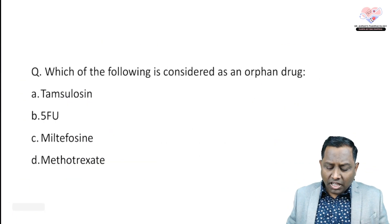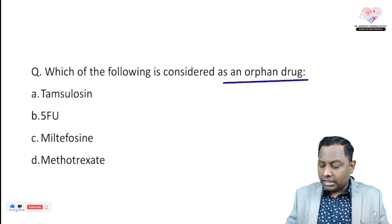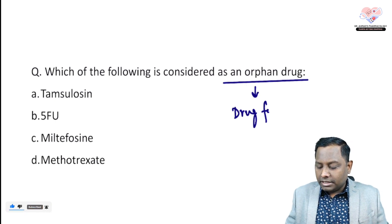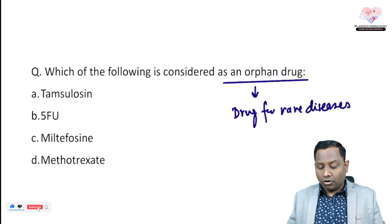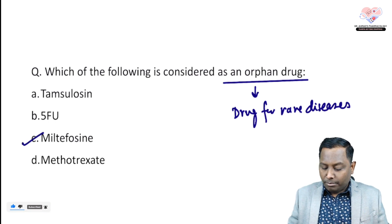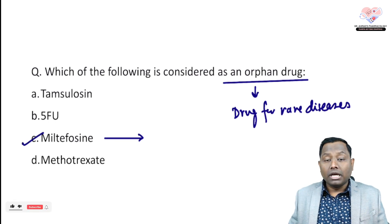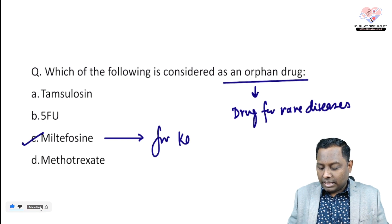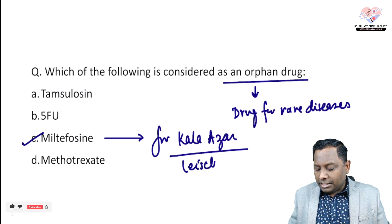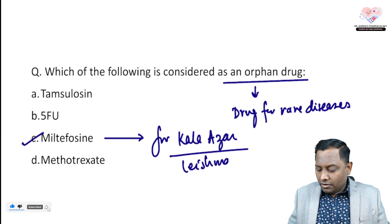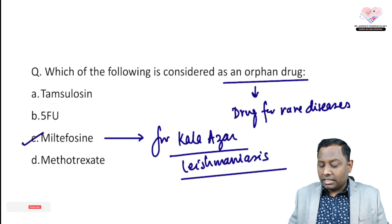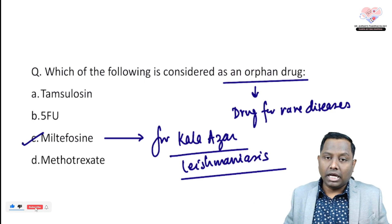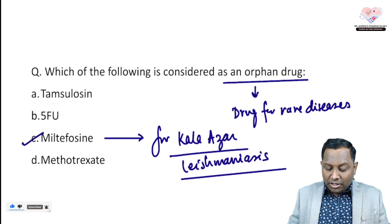The fourth question asks which of the following is an orphan drug. Orphan drugs are drugs for rare diseases. Among the given options, Miltefosine is an orphan drug. Miltefosine is mainly used for Kala-azar, also called Leishmaniasis, where it promotes apoptosis of the Leishmania parasite.